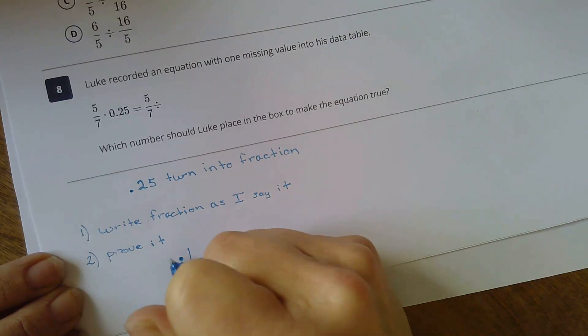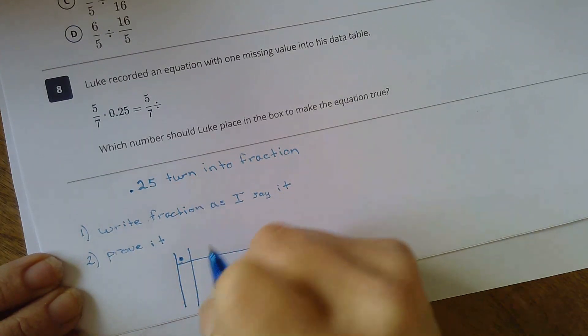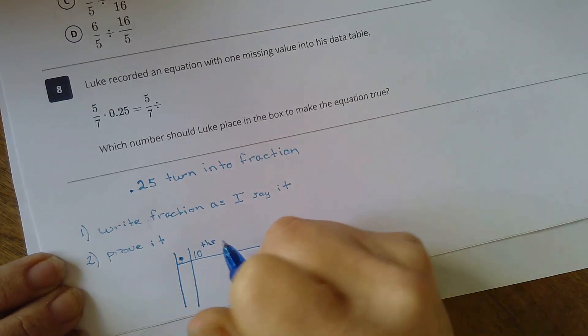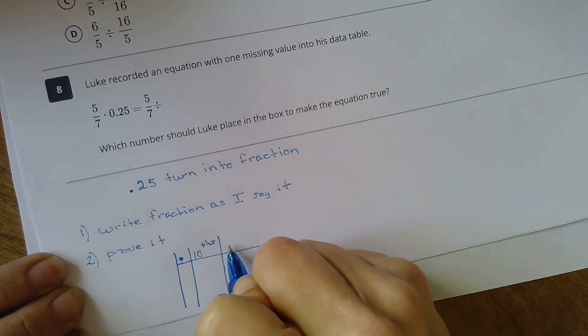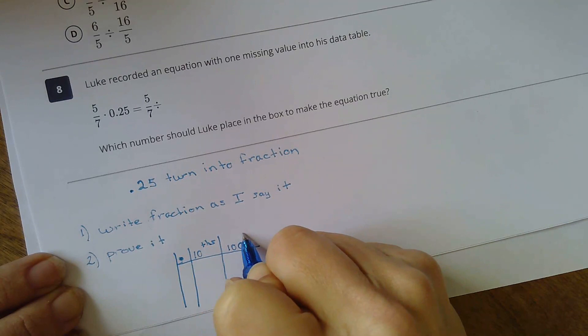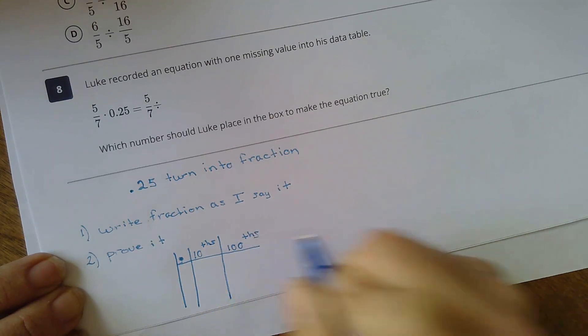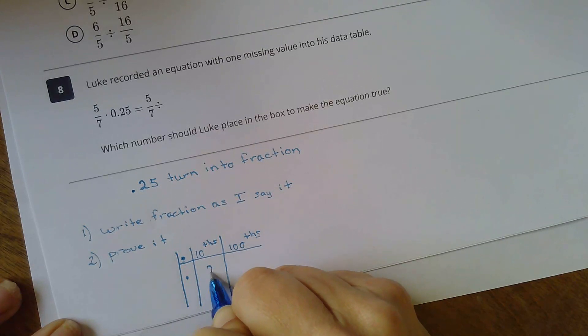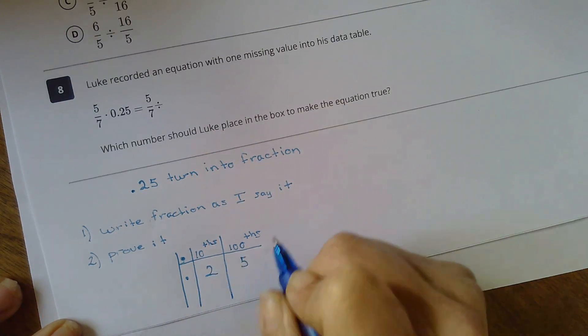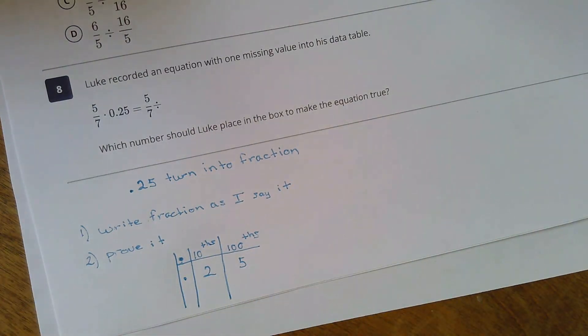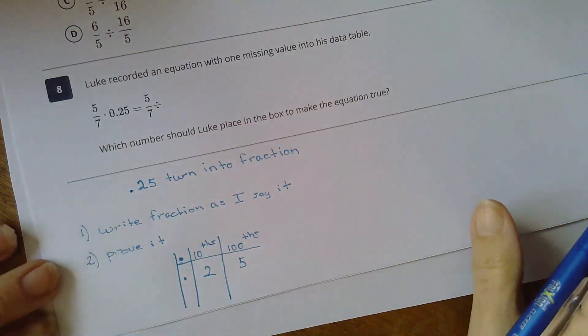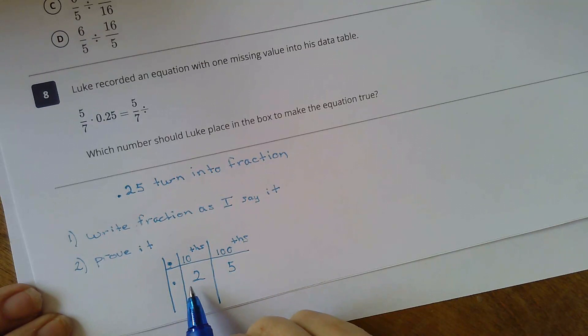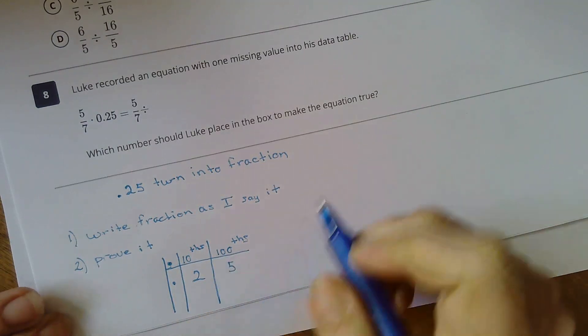Everything that we do needs to have visible thinking to prove it. We never just go with it. This is the work that each problem that you do, this is what I'm looking for. So sure enough, 25 hundredths.